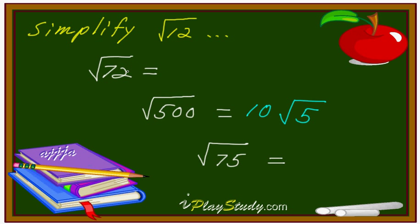What about this one then? That's right, 36 times 2. Then 36 is the perfect square number. 6 square root of 2. Fantastic. Keep looking at this. Then you get the idea.